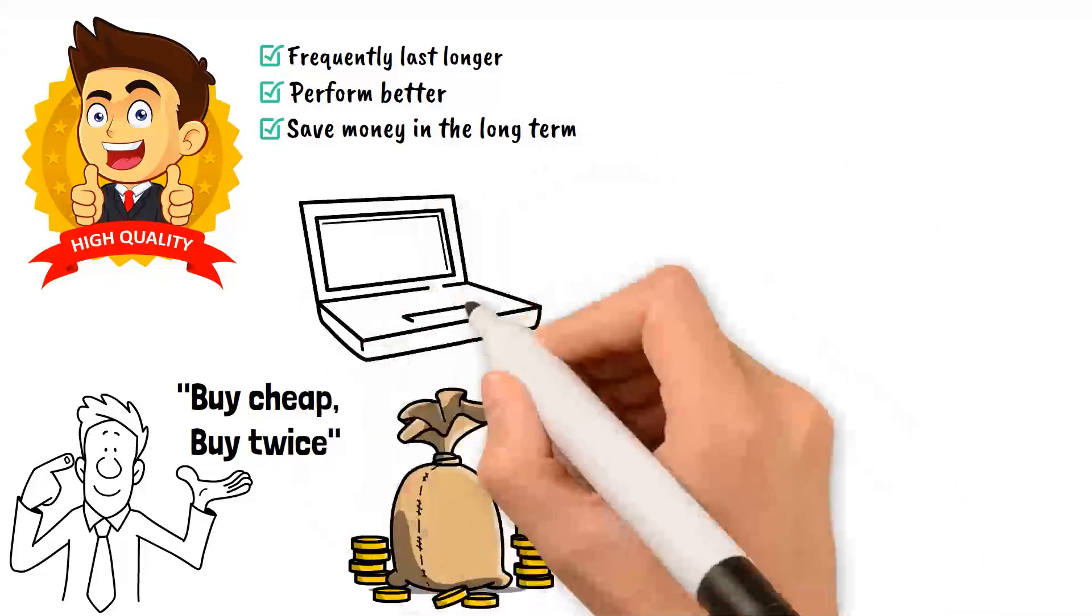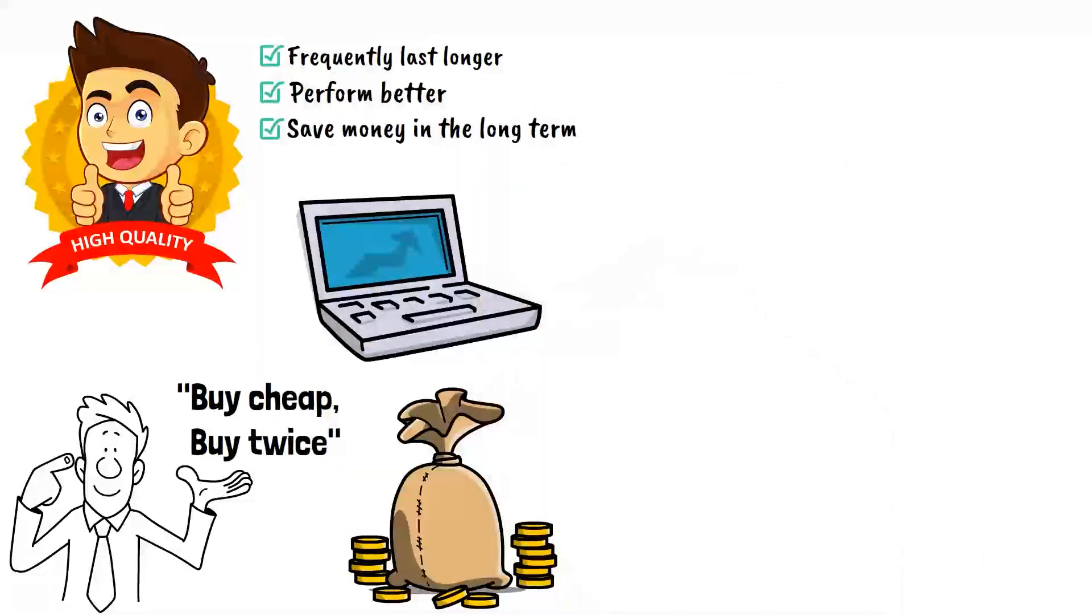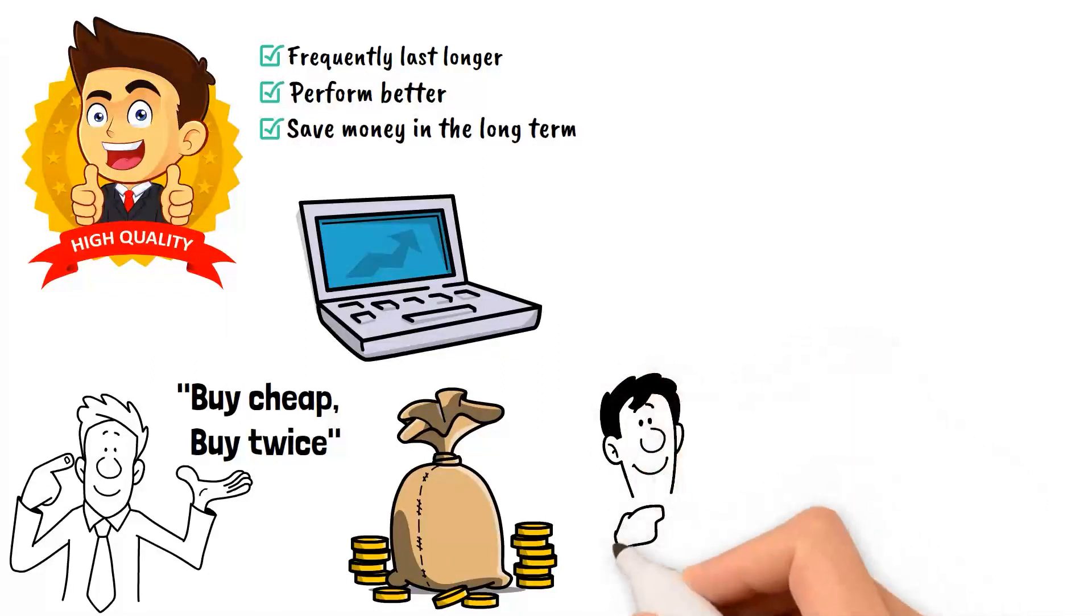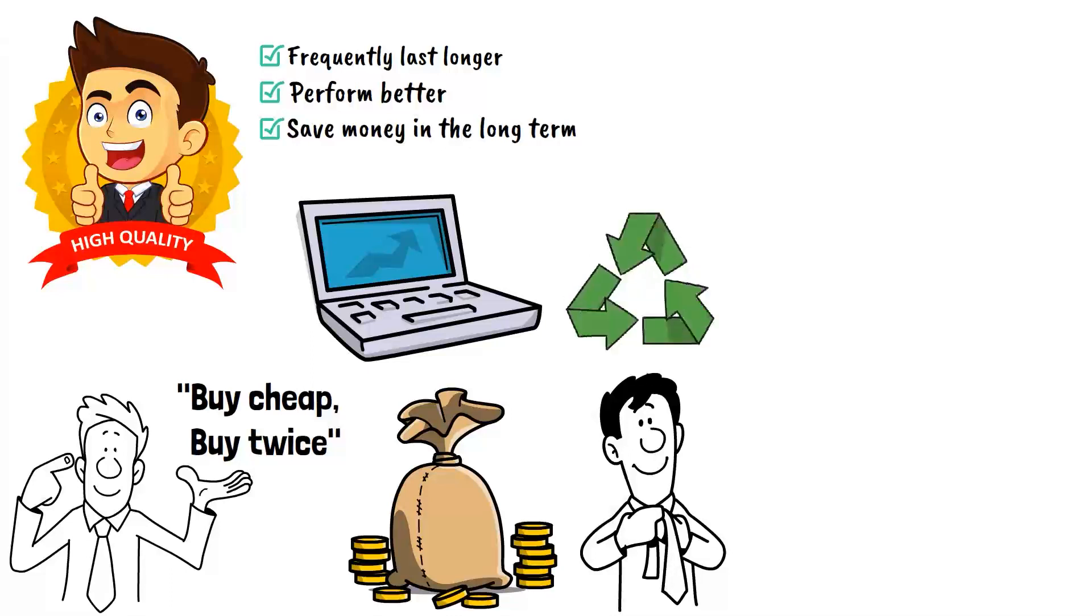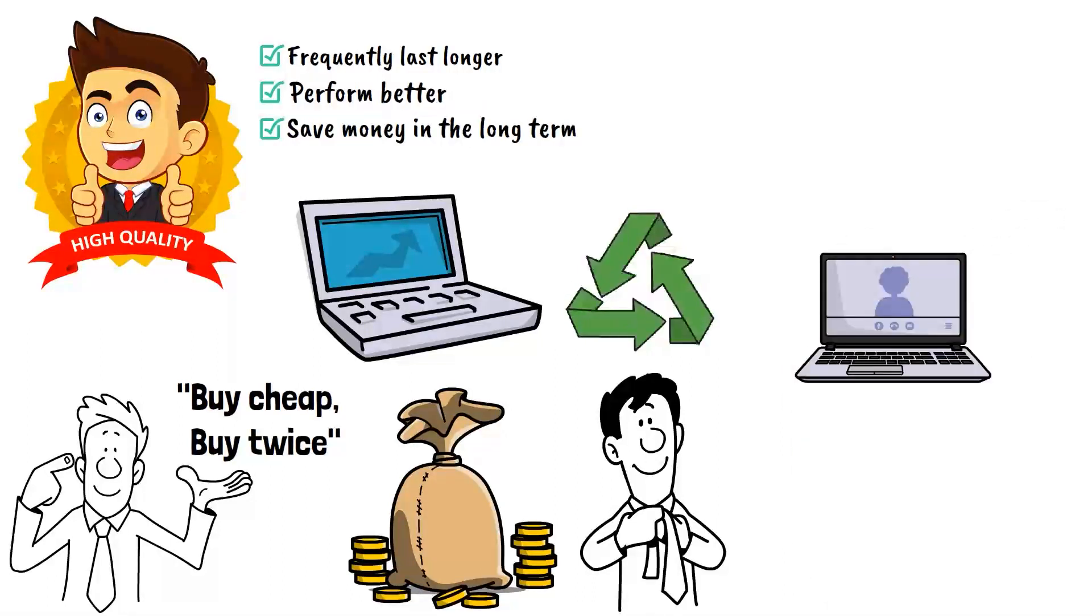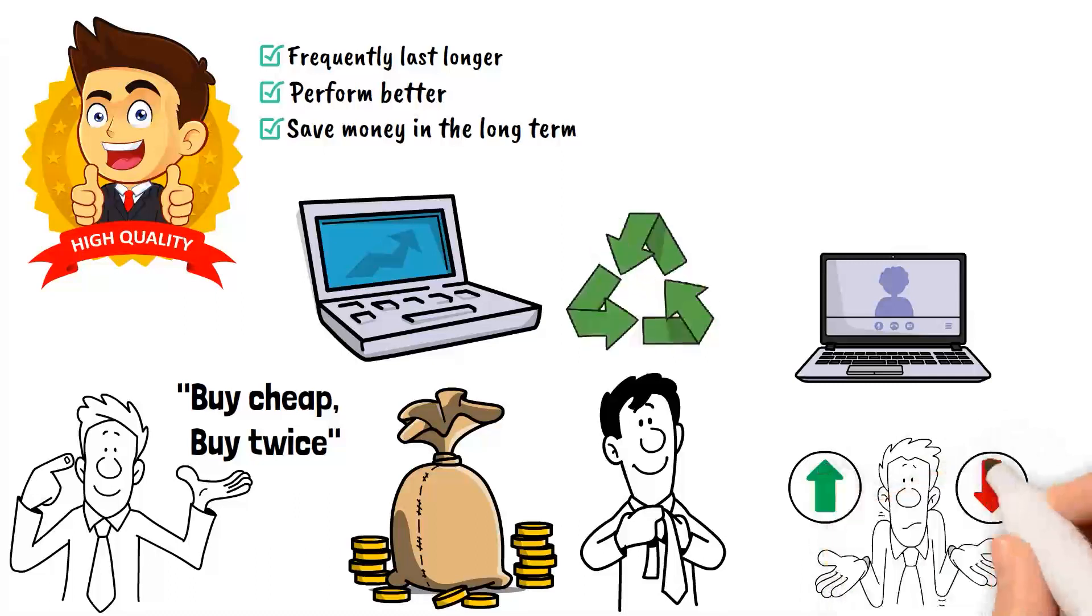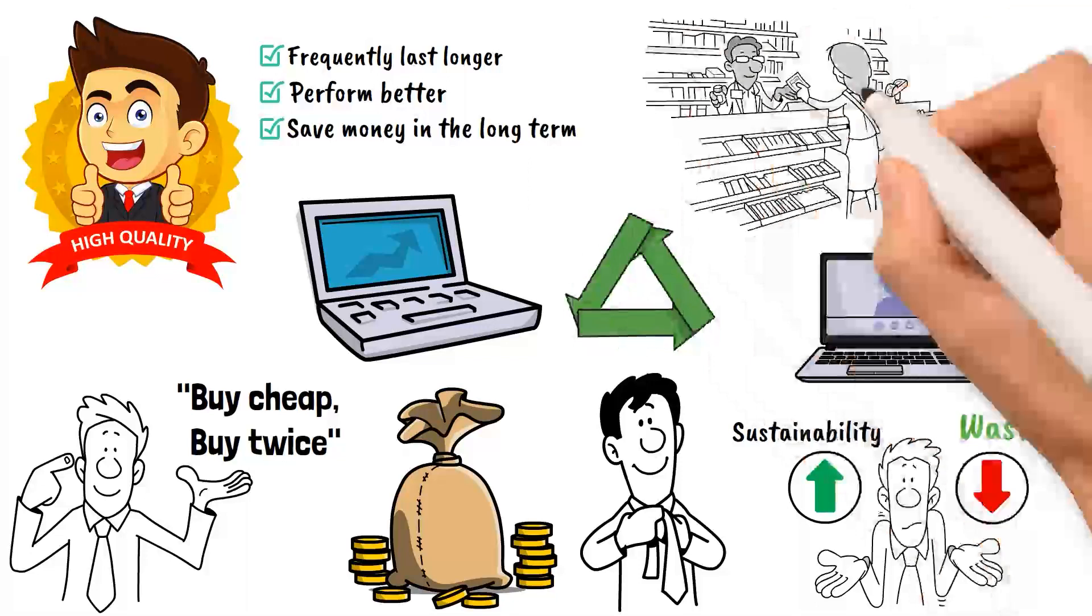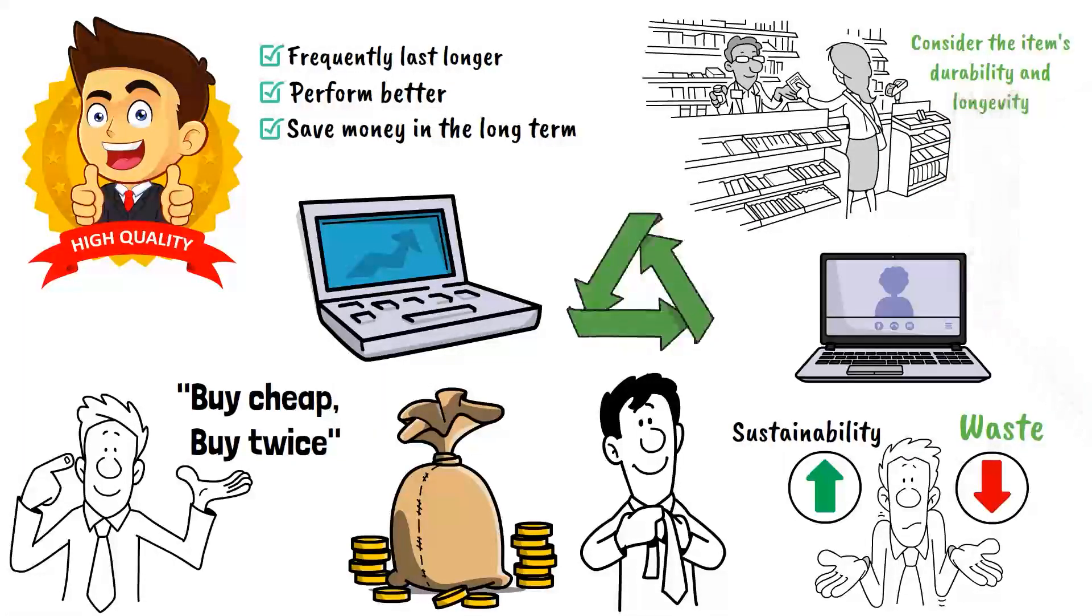The movement for higher-quality goods is gaining momentum. Take, for example, apparel. A well-made piece of clothing may cost more upfront, but it will last for years, whereas a cheaper version may need to be replaced after a few months. Electronics, furniture, and other household objects are similarly affected. Embracing this minimalist habit not only leads to savings, but also helps reduce waste and promotes sustainability. So, the next time you're shopping, consider the item's durability and longevity.